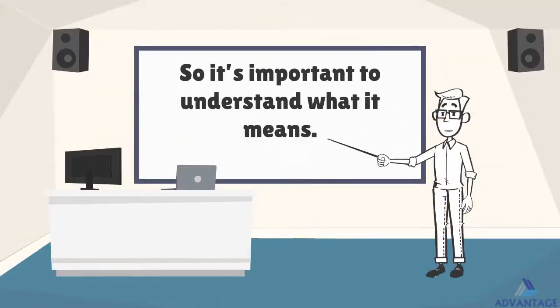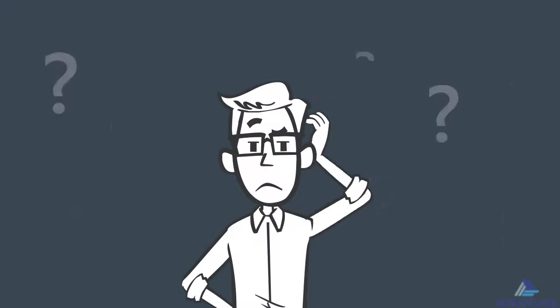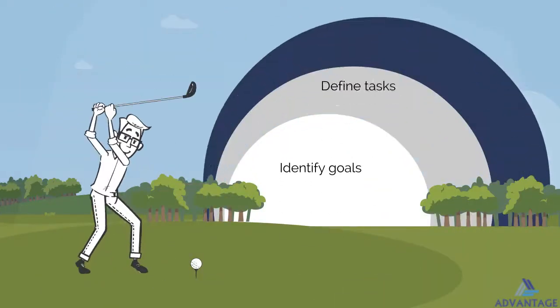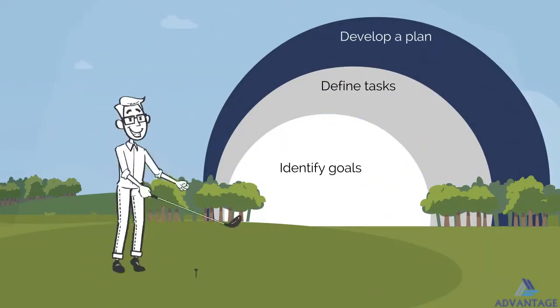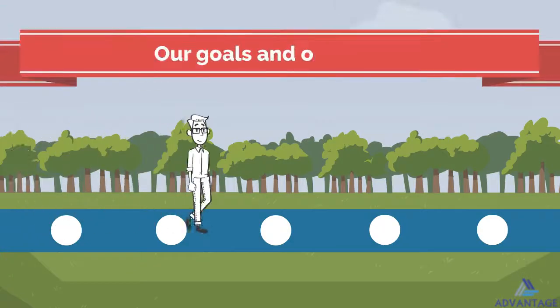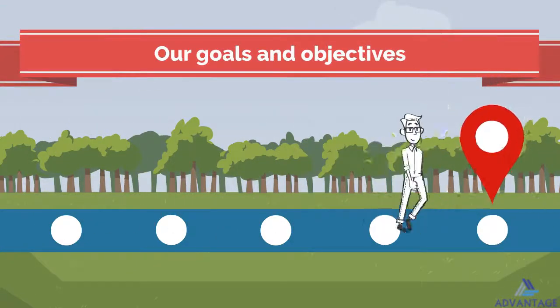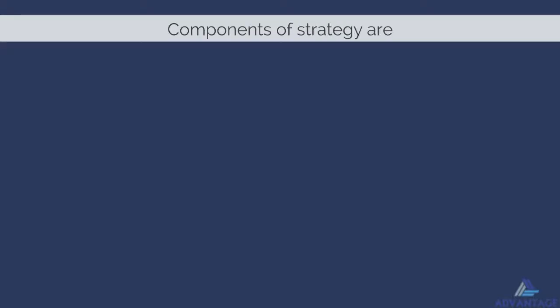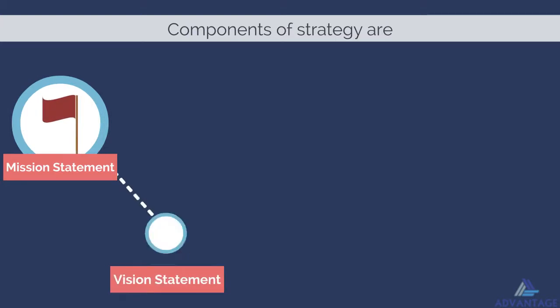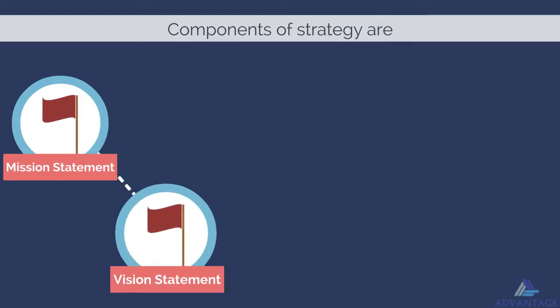So what is strategy? Strategy is the direction we choose to achieve a certain goal or objective — or how we're going to achieve our goals and objectives. The components of strategy include the mission statement, answering why do we exist, and the vision statement.